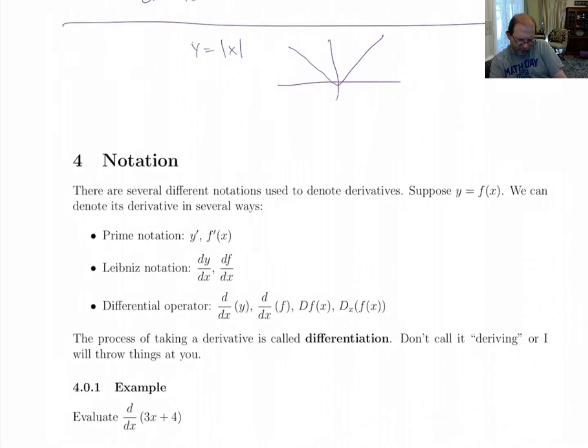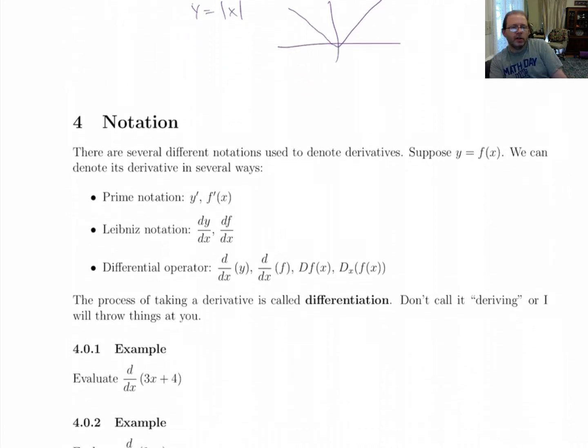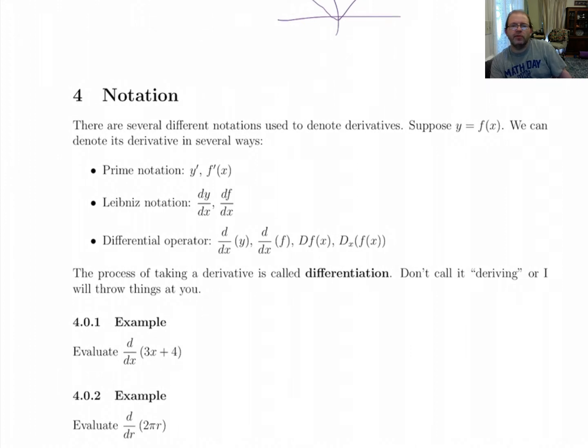All right. The other thing I want to talk about on this video is notation. So far, we've been using the prime notation for the derivative, but there are several ways we could do this. So, suppose you've got y equals f(x). You can use the prime notation and refer to the derivative either as f prime or as y prime.